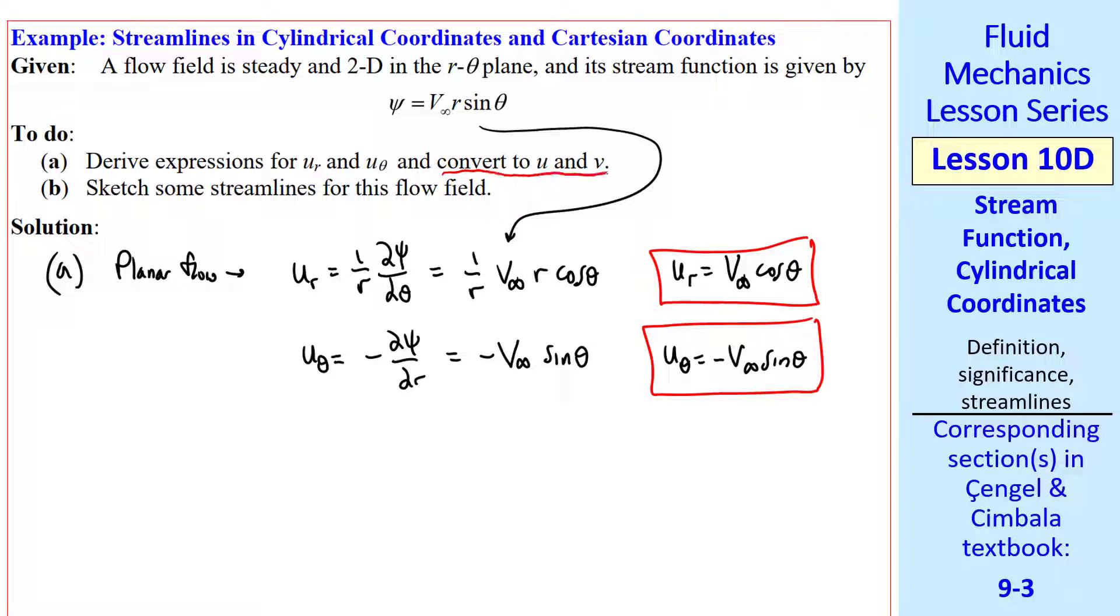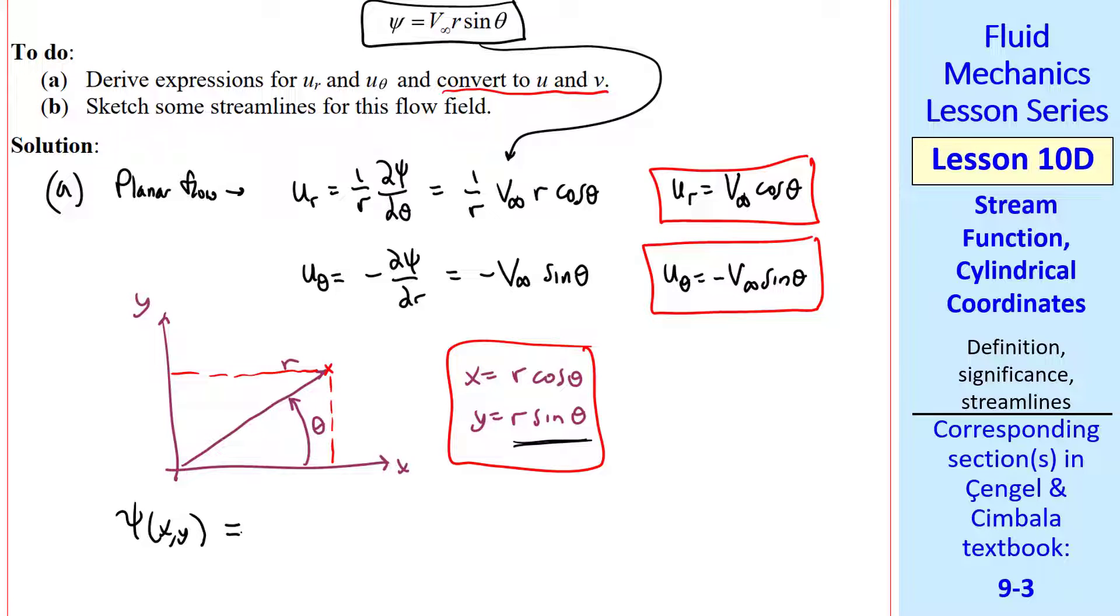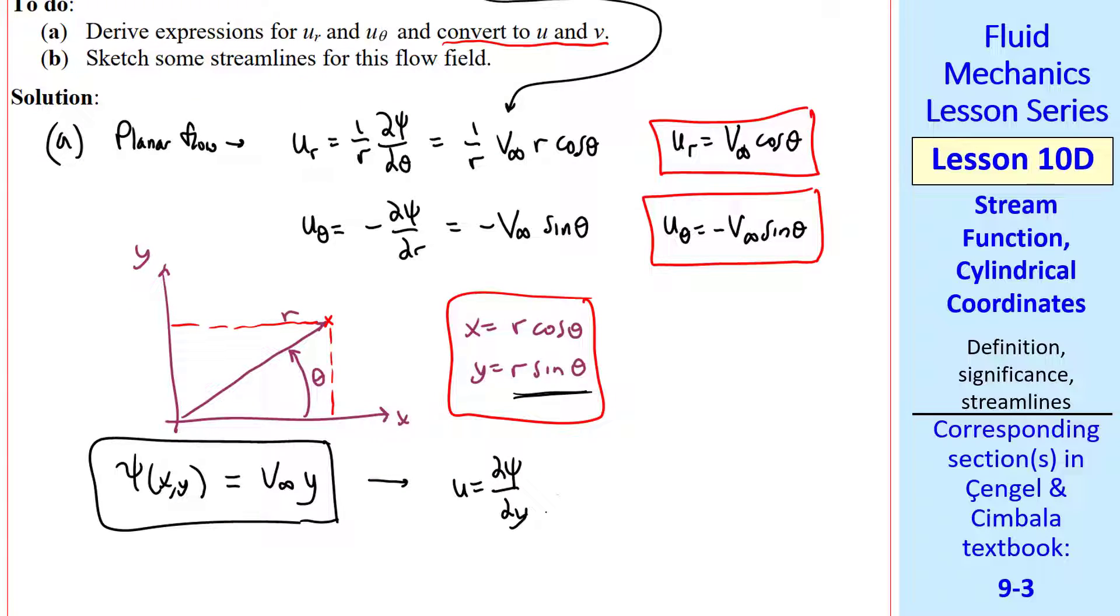Now let's convert to U and V. I'll resketch the axes, both X and Y axes and R and theta axes. And we see from simple trig that X is R cosine theta and Y is R sine theta at any point in the flow. So this equation for psi becomes V_infinity times Y. So the equivalent psi in X, Y coordinates is psi X, Y equal V_infinity Y. From which we can calculate U and V. U is del psi del Y, which is V_infinity. V is negative del psi del X, which is zero.